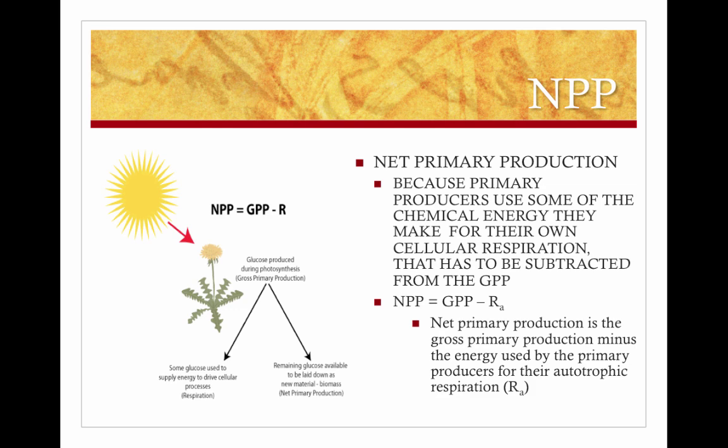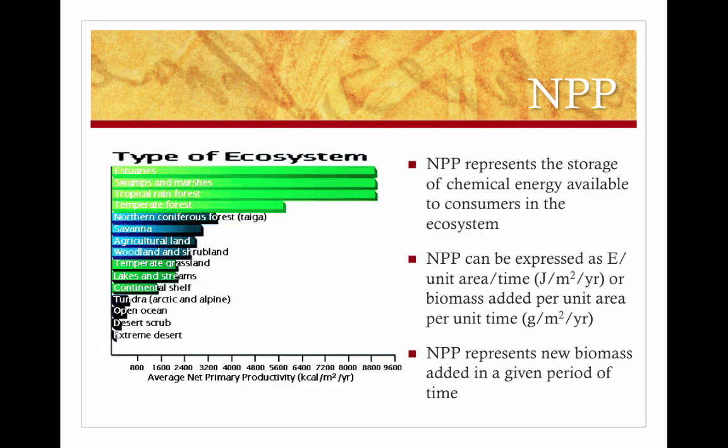Plants and algae take in sunlight and convert it into chemical energy, usually in the form of glucose, but they use some of that glucose for their own cellular respiration. So NPP is talking about what's left over after they consume some of their own glucose — it's usually about half of the GPP. The NPP represents the storage of chemical energy available to consumers in the ecosystem.